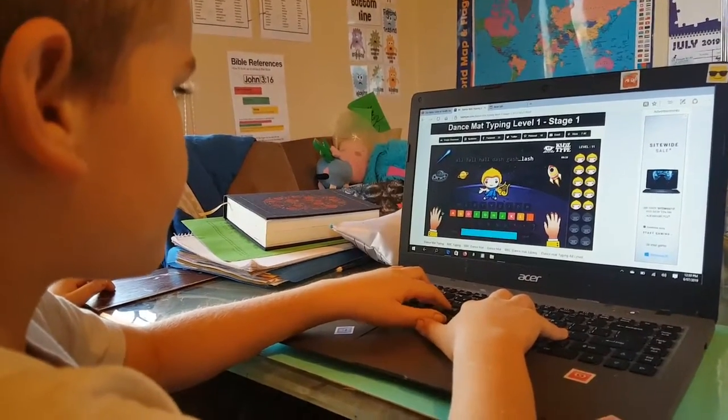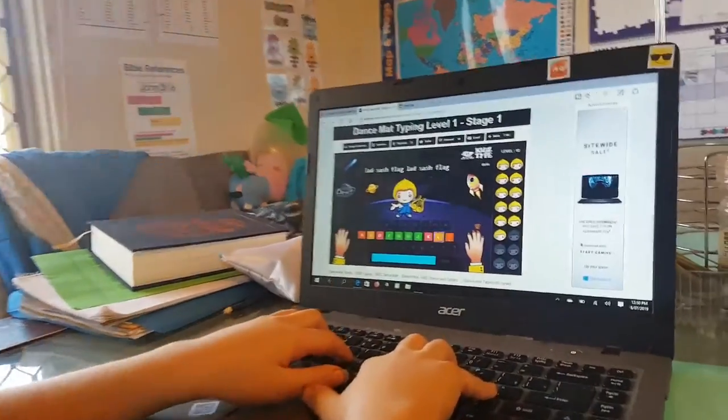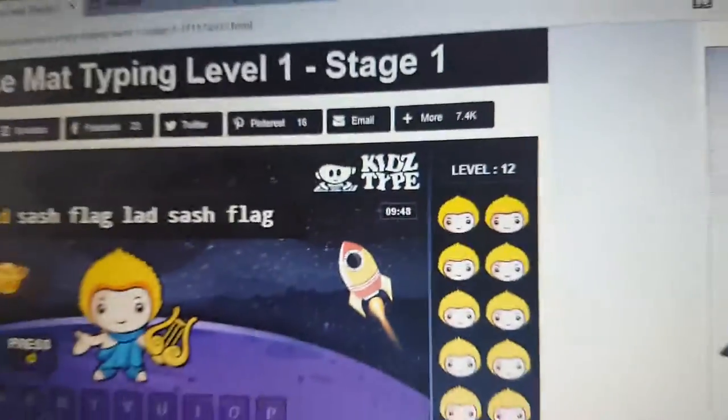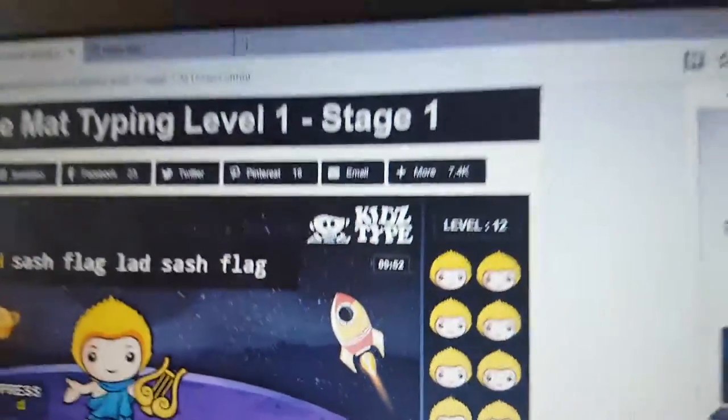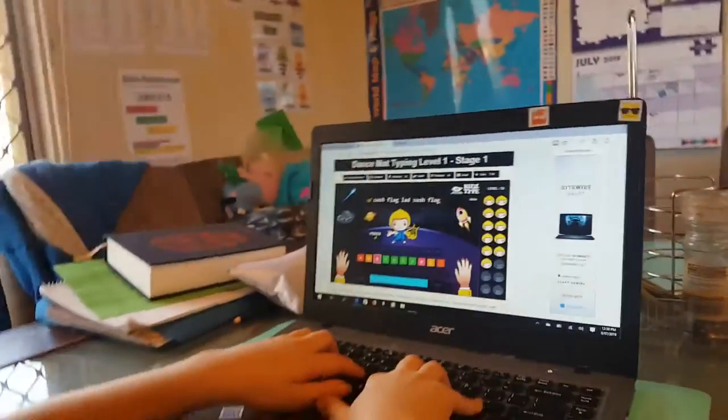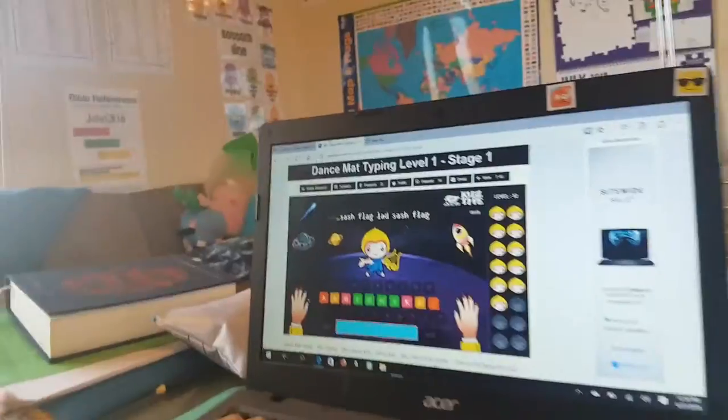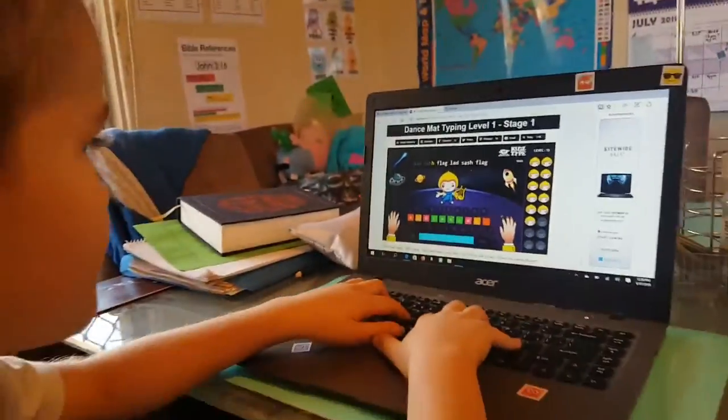So as you can see everyone, RJ, first time doing Kids Type, and he has made it to level 12 in stage 1 in 9 minutes and 50 seconds. You've been doing this for 10 minutes. Almost 10 minutes. See, there we go, 9 minutes 57, 58. There you go, you've been typing for 10 minutes. Well done, RJ!